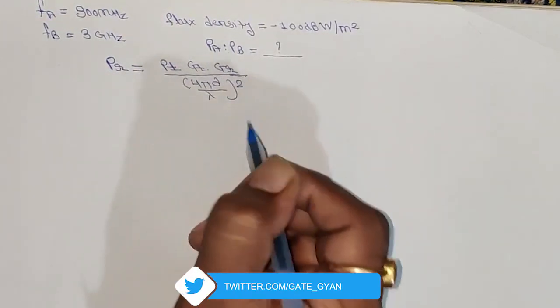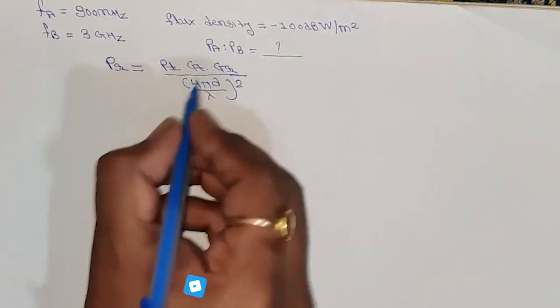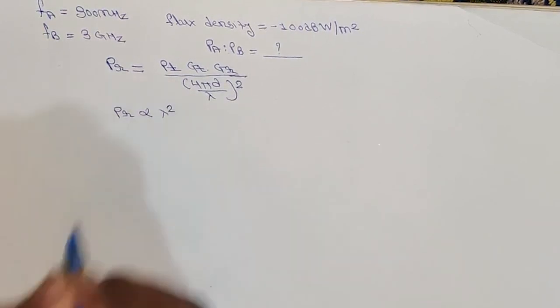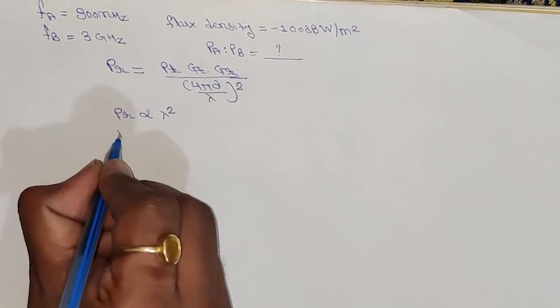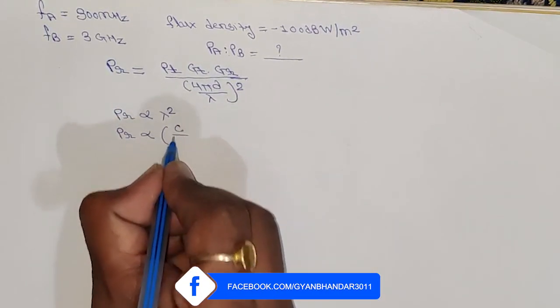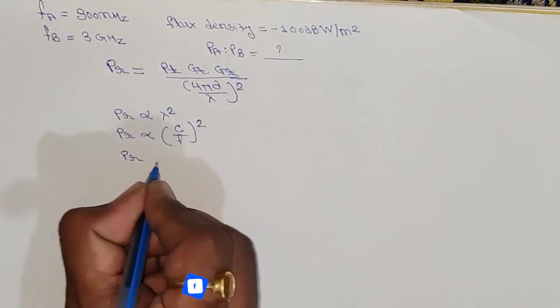You have to remember this equation. From here we can write that Pr is proportional to lambda square, or we can write Pr is proportional to c by f whole square. So we can also write Pr is proportional to 1 by f square.